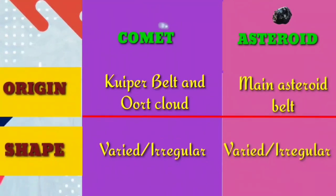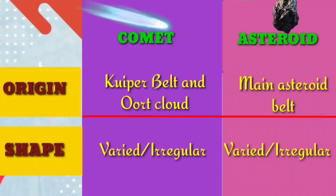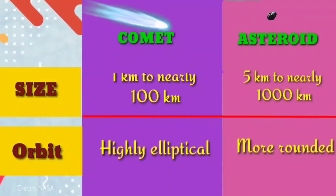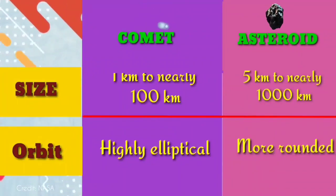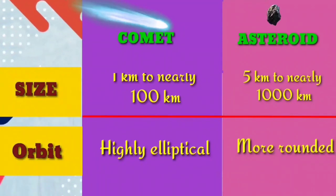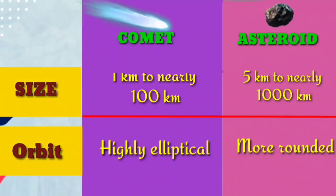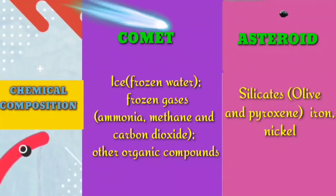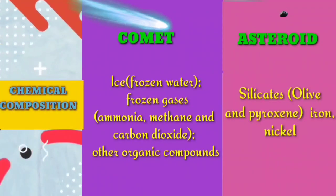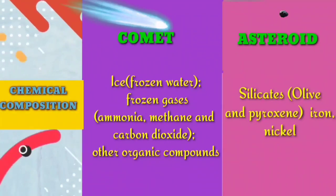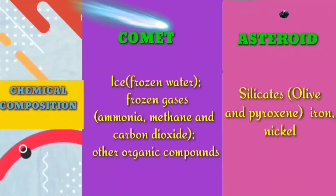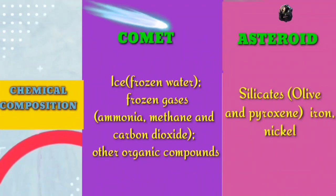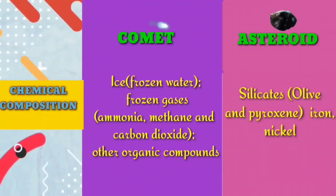Their shape is varied or irregular. The size of a comet is 1 km to nearly 100 km, while an asteroid is 5 km to nearly 1,000 km. The orbit of a comet is highly elliptical, while an asteroid's orbit is more rounded. The chemical composition of a comet includes ice or frozen water, frozen gases like ammonia, methane, and carbon dioxide, and other organic compounds. While asteroids are composed of silicates like olivine and pyroxene, iron, and nickel.